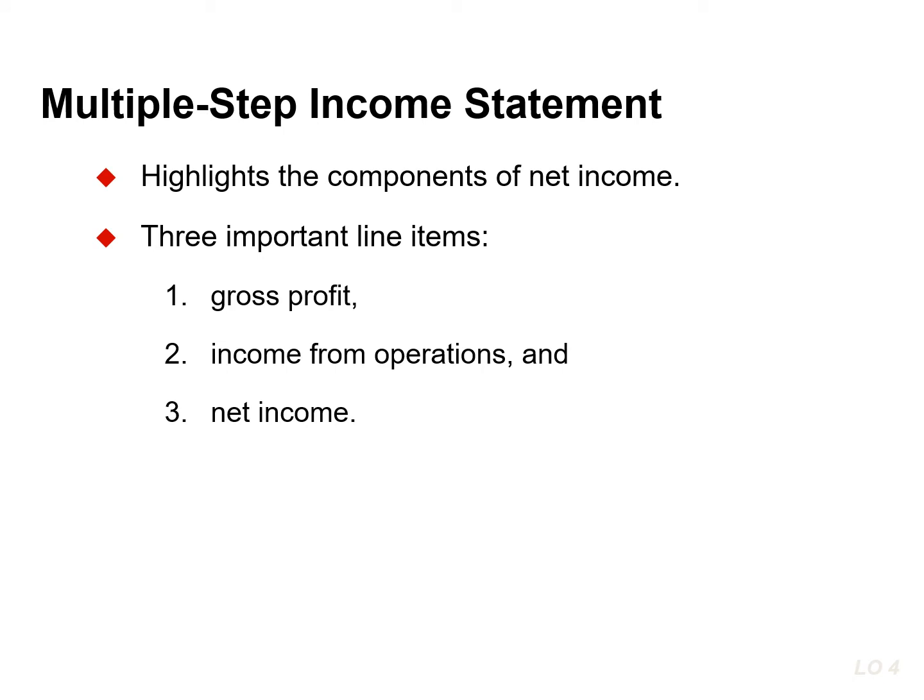An alternative form is the multiple-step income statement, which is often considered more useful because it highlights the components of net income. The multiple-step income statement has three important line items: gross profit, income from operations, and net income.